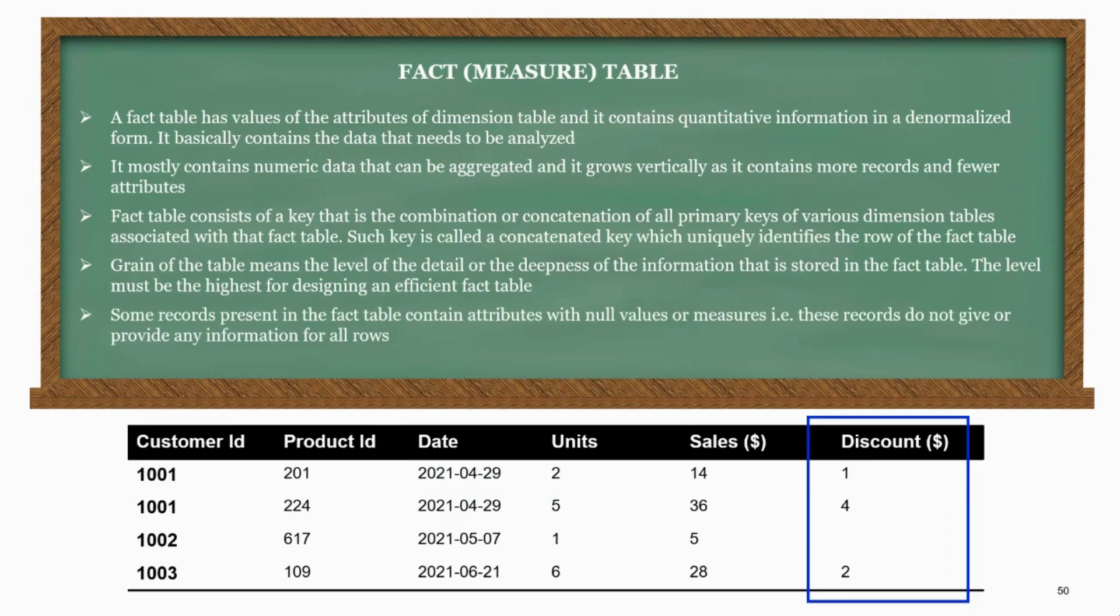Some records present in the fact table contain attributes with null values or measures. These records do not give or provide any information for all rows.